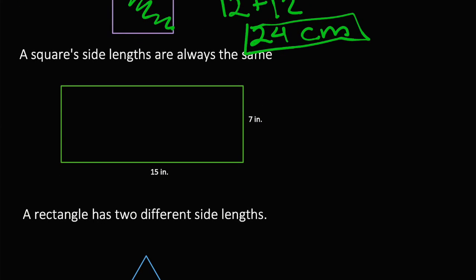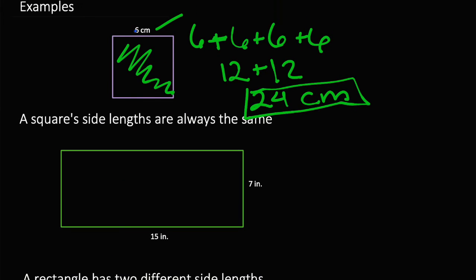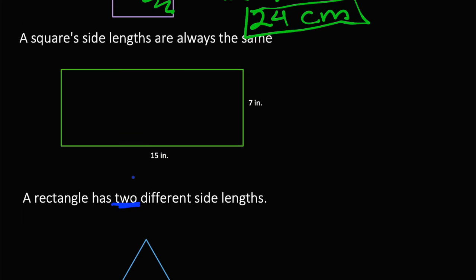A rectangle always has two different side lengths. A square only has one different side length — we saw that all of them were 6. The rectangle has 2. So we know that one side is 15 inches and another is 7 inches.